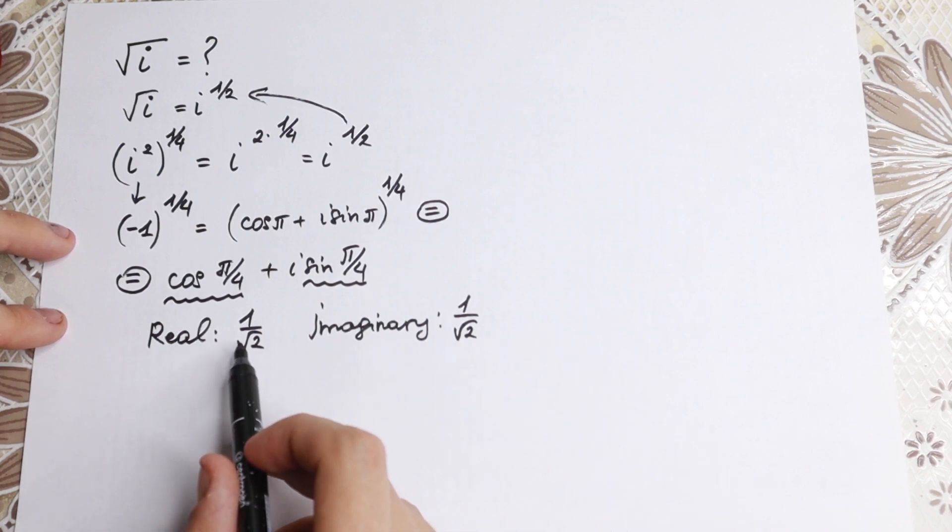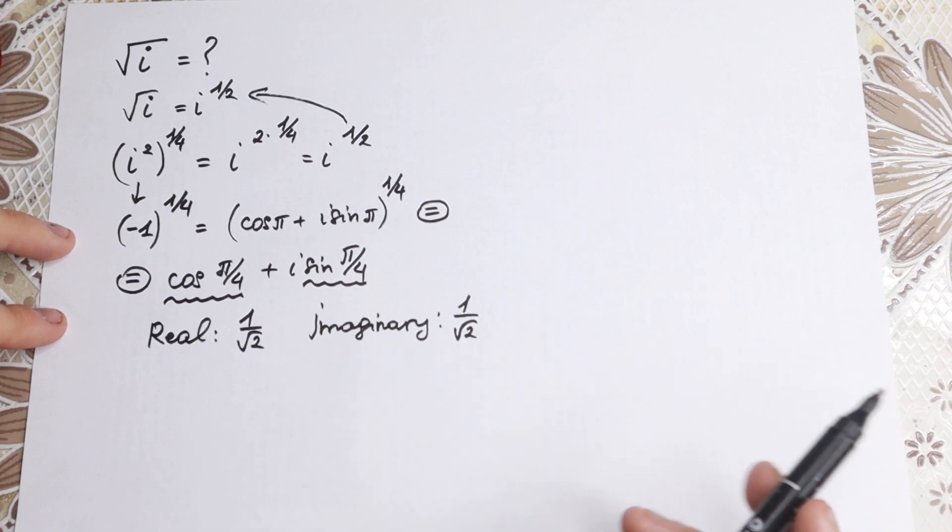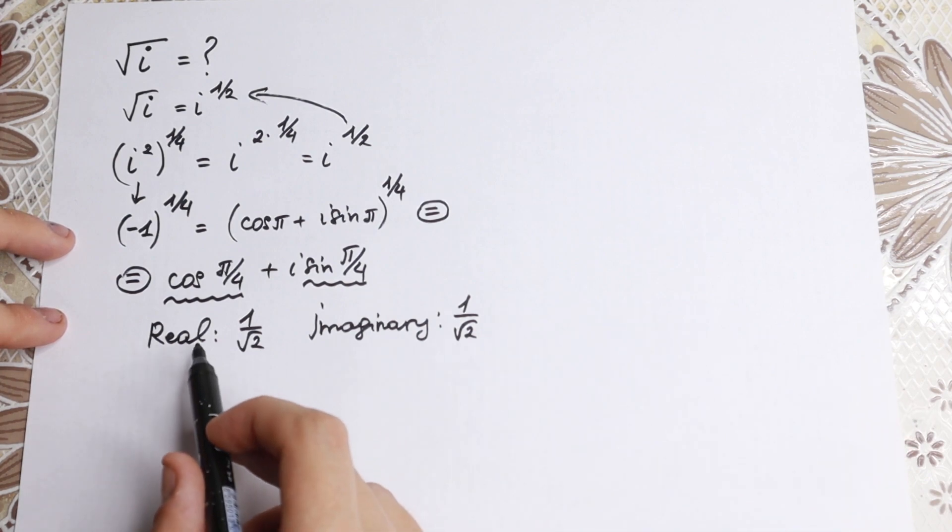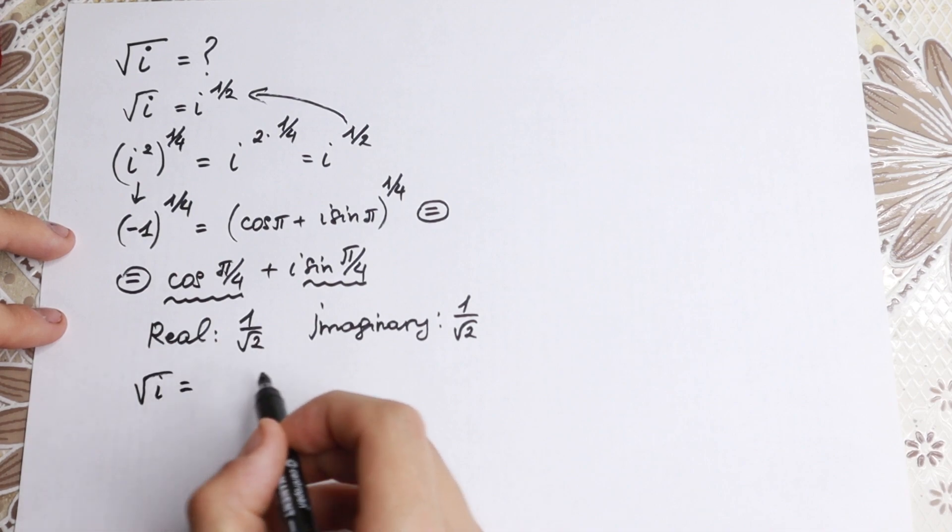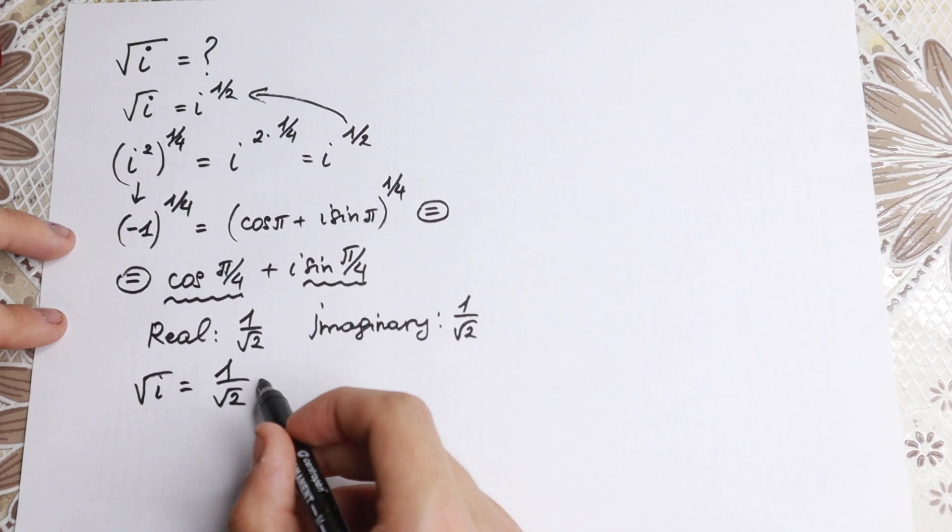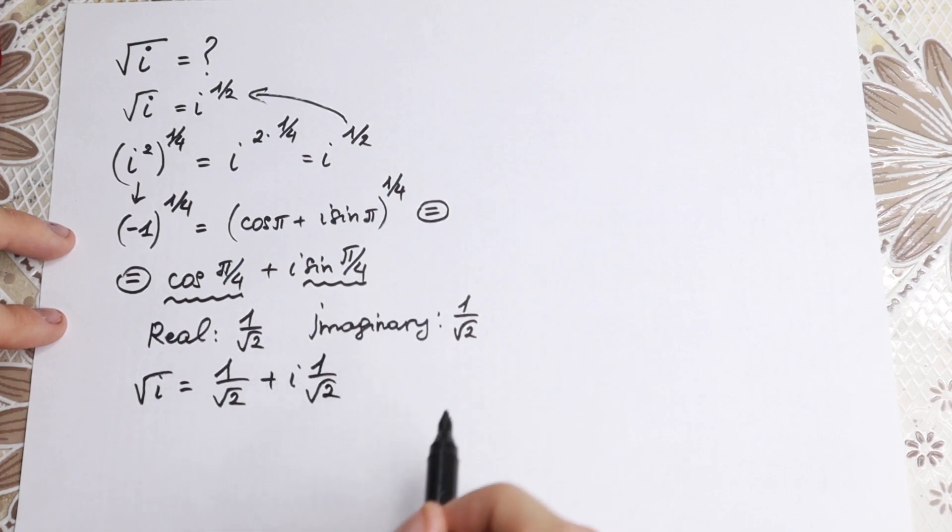So as you can see, the real part is one over root two, and the imaginary part is also one over root two. So we can write our answer: square root of i equals one over root two plus i times one over root two.